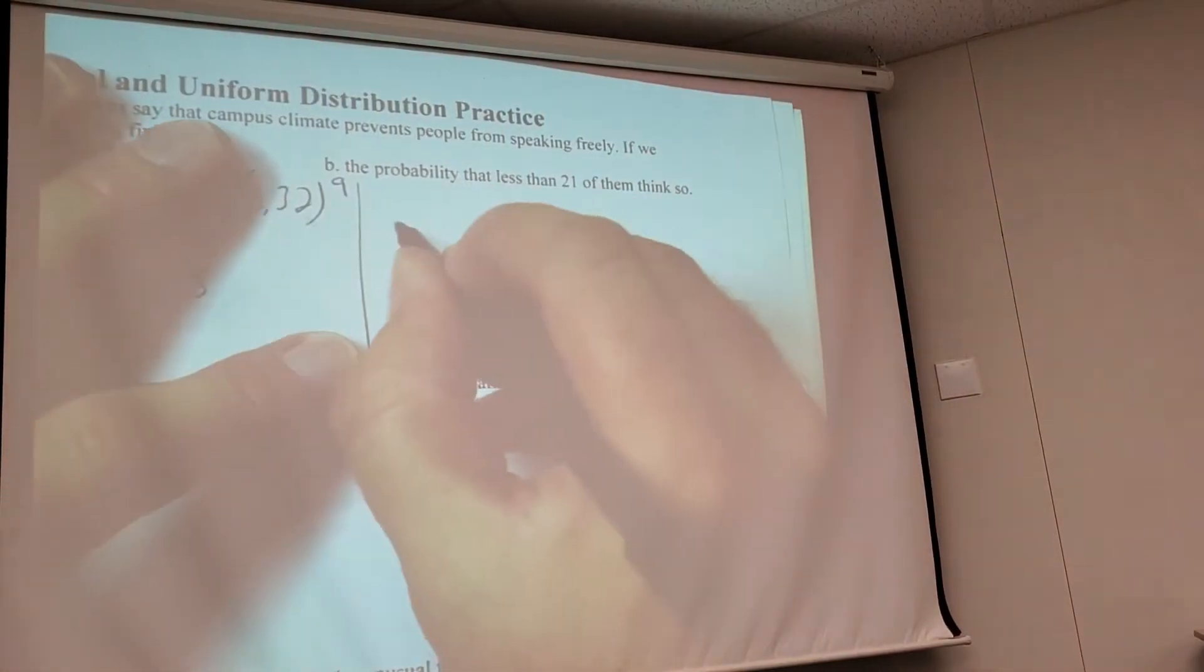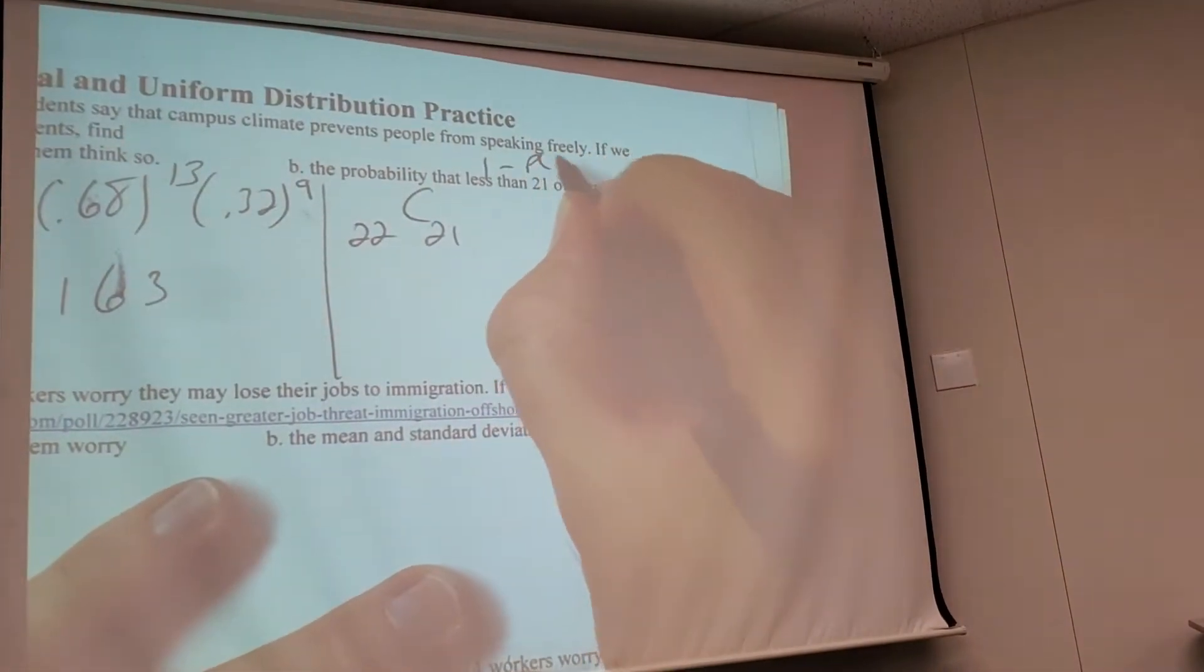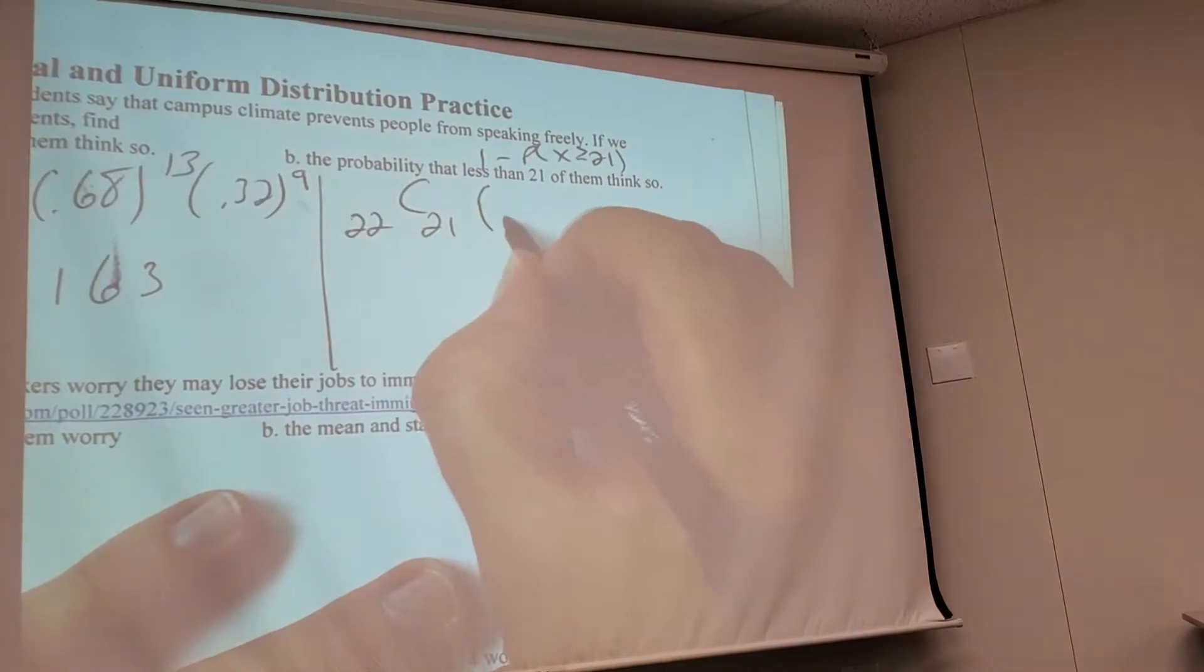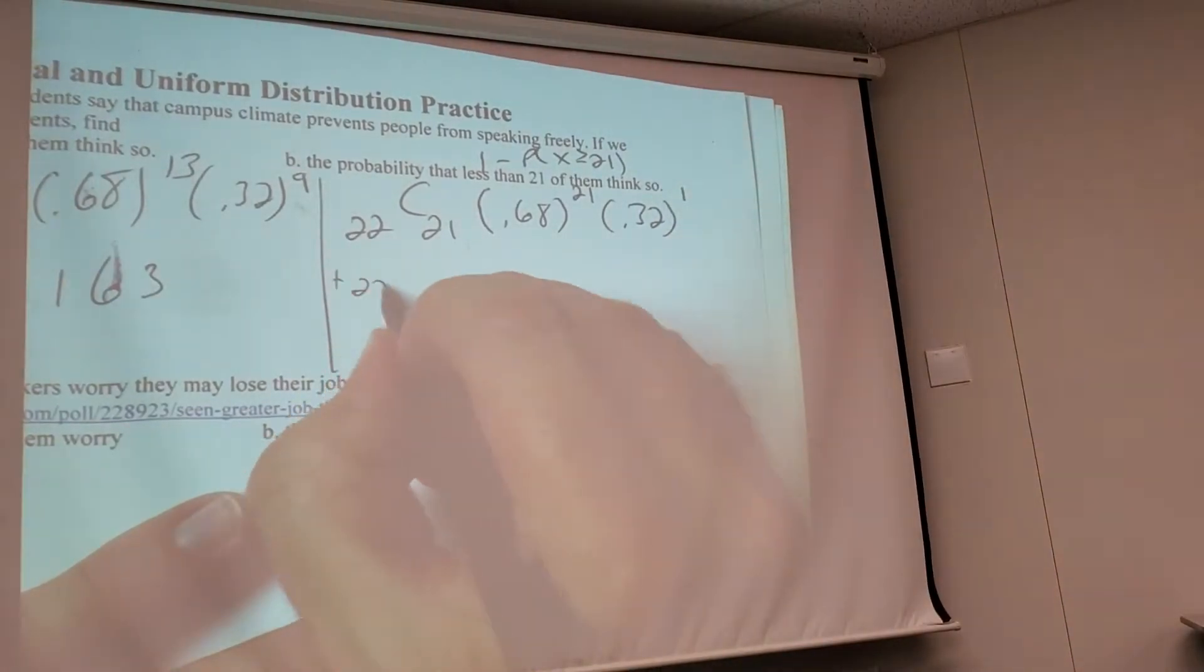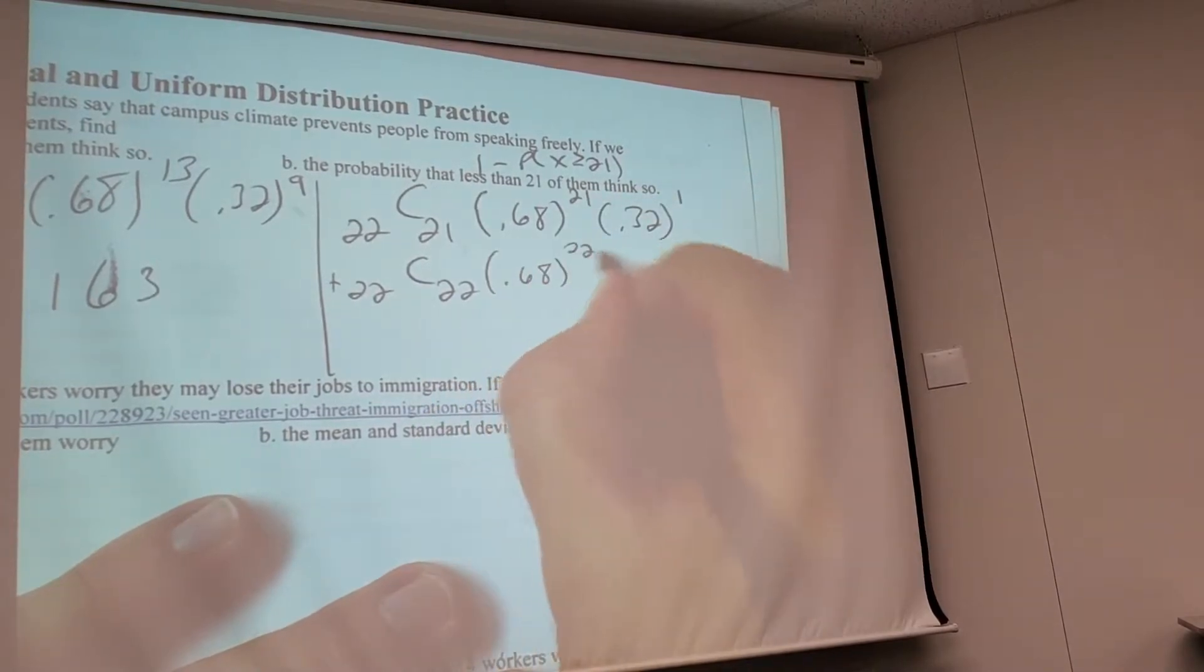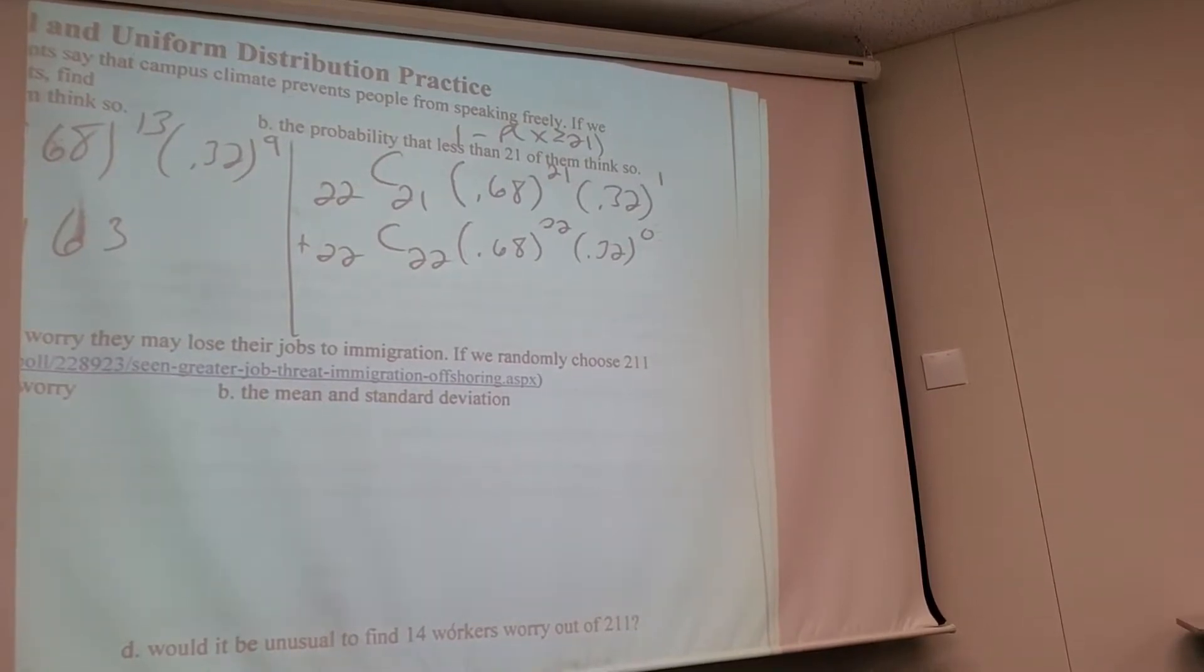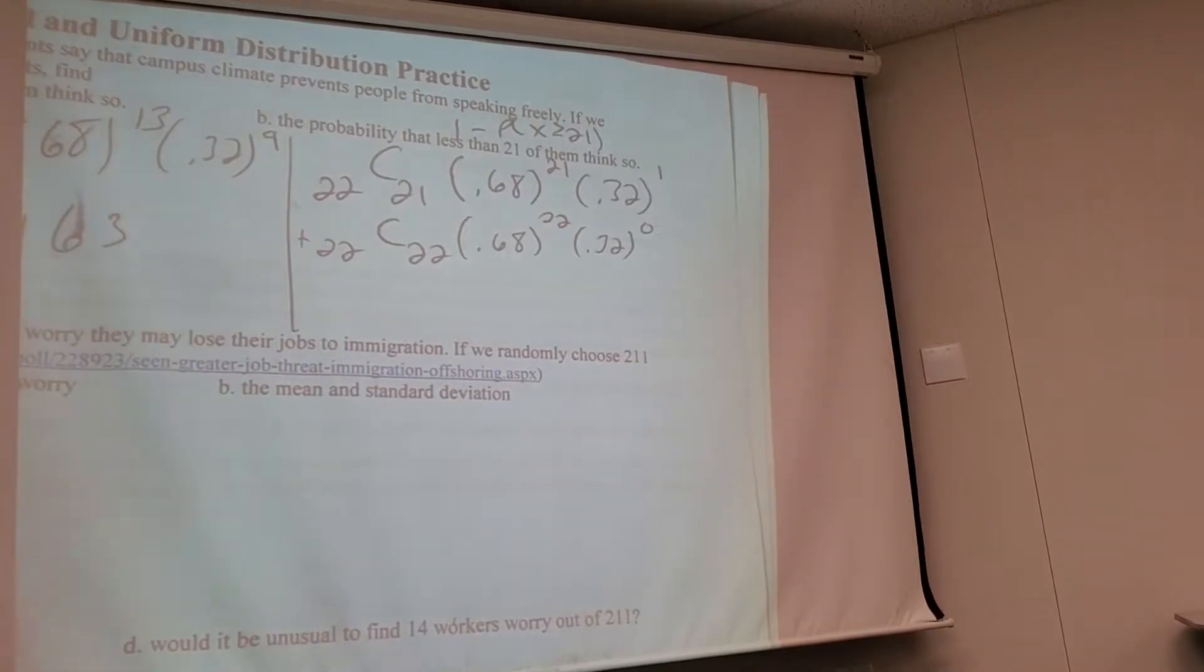So I need a formula for 21. So I'm going to do 1 minus the probability that x is at least 21. Because that has a lot less work. So here's the one for 21, right? 22 choose 21, 0.68 to the 21, 0.32 to the first power. And the 22, now I want to do one for 22. 22 choose 22, 0.68 to the 22, 0.32 to the nothing. If I add those together, that'll answer the opposite of the question they asked, which is okay because I'm not done yet. I'm not going to tell a person this number. I'm going to do 1 minus and then give it that.